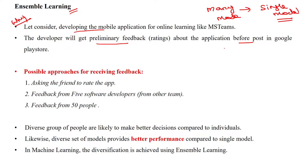What are the possible approaches they will follow to receive feedback? They may give it to a single friend to get feedback about the application. Or the second possibility: they will give it to five software developers in the same organization but on different teams.